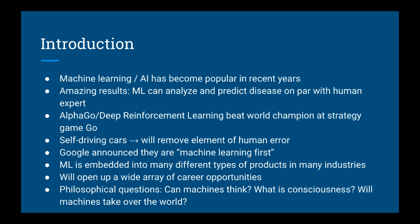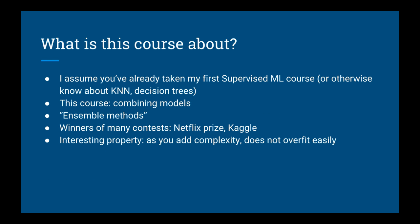Machine learning also raises some philosophical questions. In this course, I've assumed you've already taken my first course on supervised learning, so you're familiar with k-nearest neighbor and especially decision trees. This course is all about combining models, because when you do that, the result is something much more powerful than any individual machine learning model.